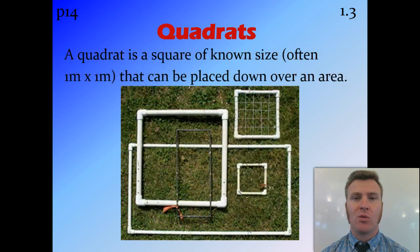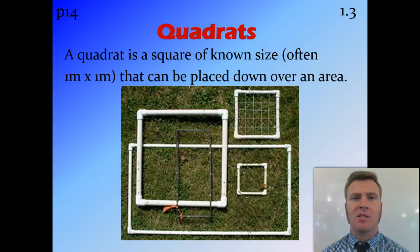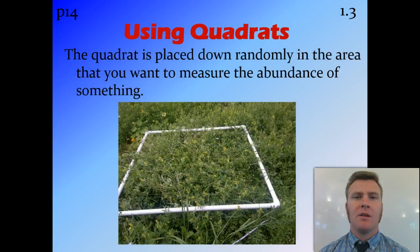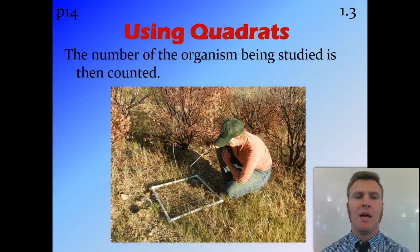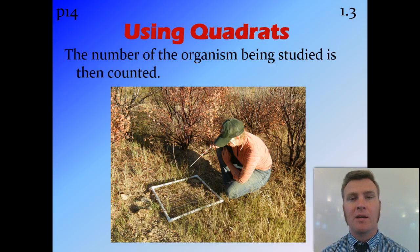A quadrat is just a square of known size. Often we use a one meter by one meter square because it makes calculations easy, but you can use other sizes. To use a quadrat, you place it down randomly in the area where you want to know the population of something, and then you count the number of organisms inside that square.